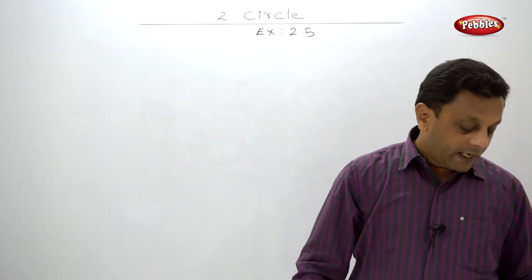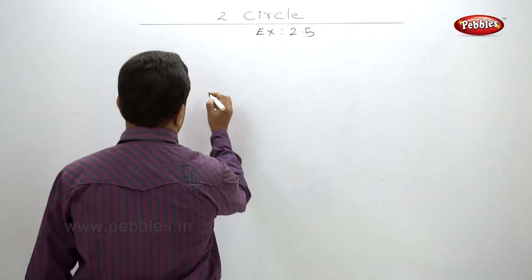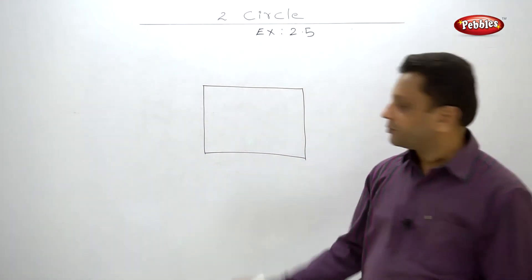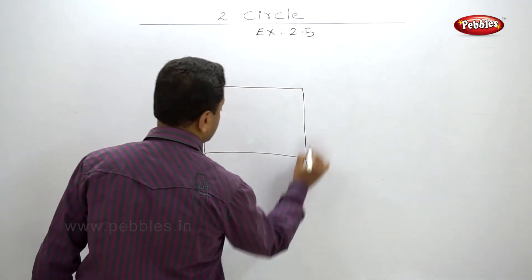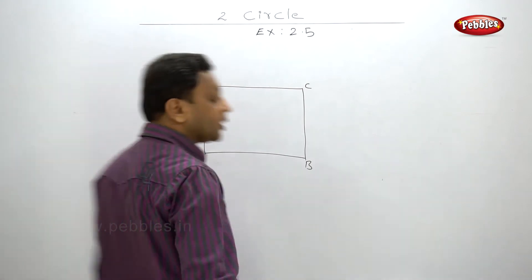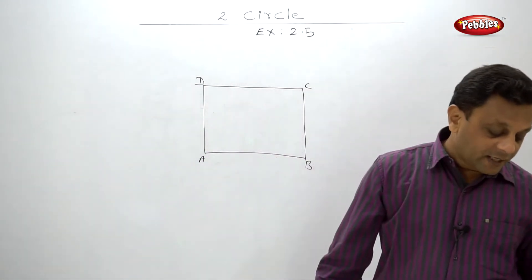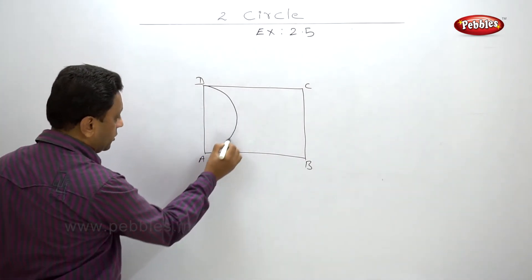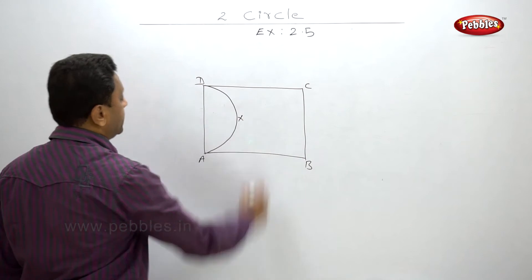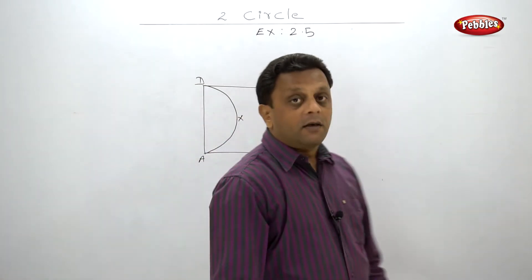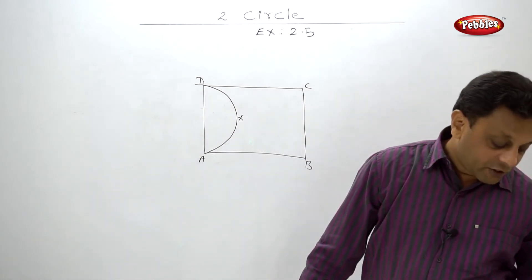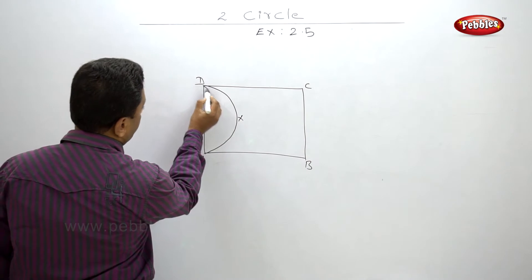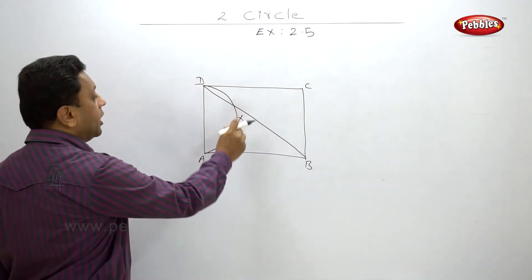The second problem: ABCD is a rectangle. Taking AD as a diameter, the semicircle AXD is drawn, which intersects the diagonal BD at X. Let us draw rectangle ABCD and the semicircle with AD as diameter passing through point X. Diagonal BD is drawn, and X is the point of intersection.